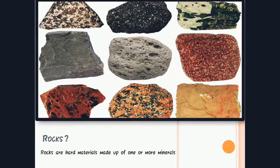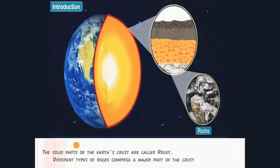First of all, let us see what is a rock. Rocks are hard materials made up of one or more minerals. In simple words, a rock is a solid made up of a bunch of different minerals. The earth is made up of several layers of rocks, and the solid parts of the earth's crust are called rocks. Different types of rocks comprise a major part of the crust.